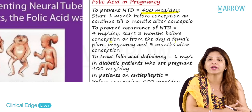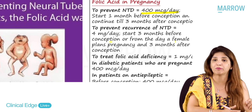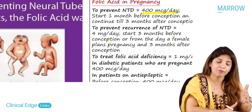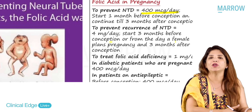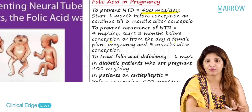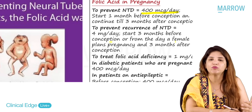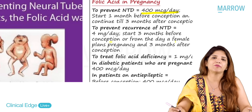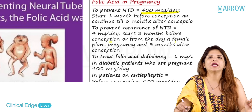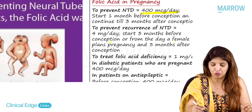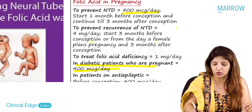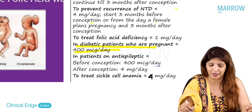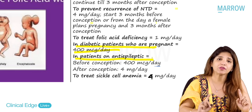Although the theoretical recommendation is to start 4 mg folic acid three months prior to conception, practically, once a female with NTD history decides to conceive, you start 4 mg per day and continue it till three months after pregnancy. For diabetic patients, the dose remains 400 micrograms. For patients on anti-epileptic drugs, the dose before conception is 400 micrograms.